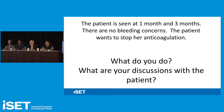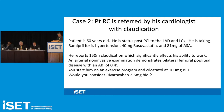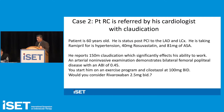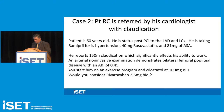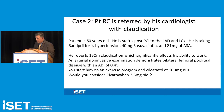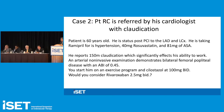Case 2: RC is a 60-year-old referred by cardiologists with claudication. He had a PCI to the LAD and left circ. He's on ramipril for hypertension, Crestor, and baby aspirin. He reports 150-meter claudication significantly affecting his ability to work. Non-invasive testing shows bilateral fem-pop disease with ABI of 0.45. You start him on an exercise program and cilostazol 100 mg twice a day. Would you consider rivaroxaban 2.5 mg twice a day?